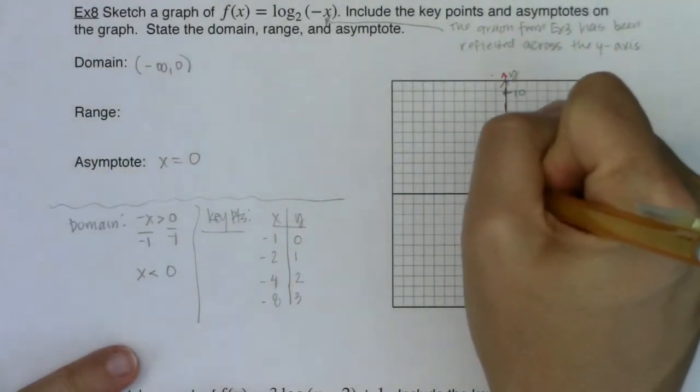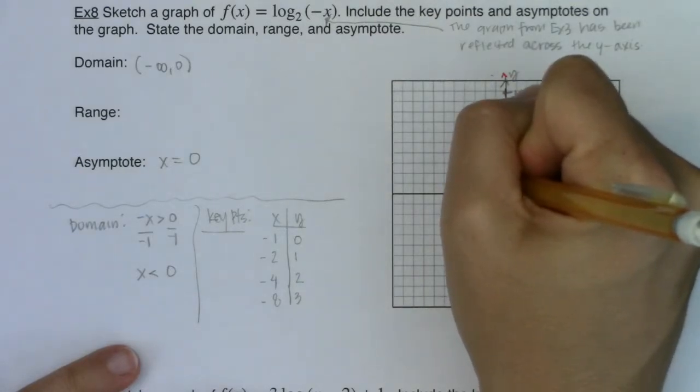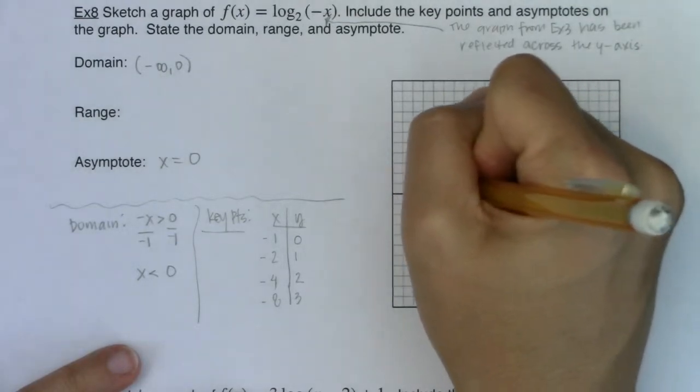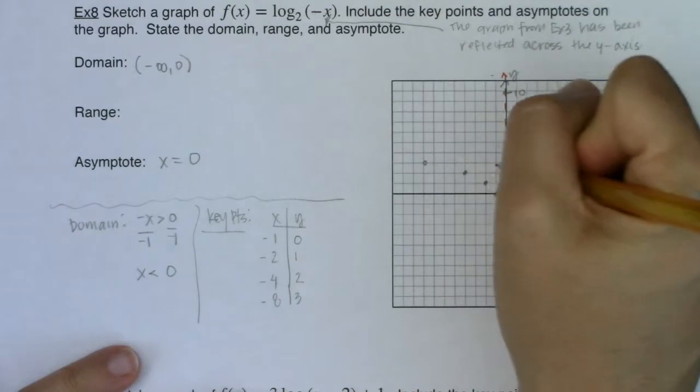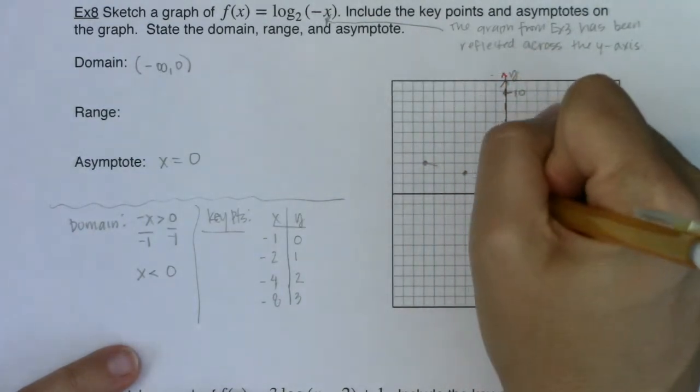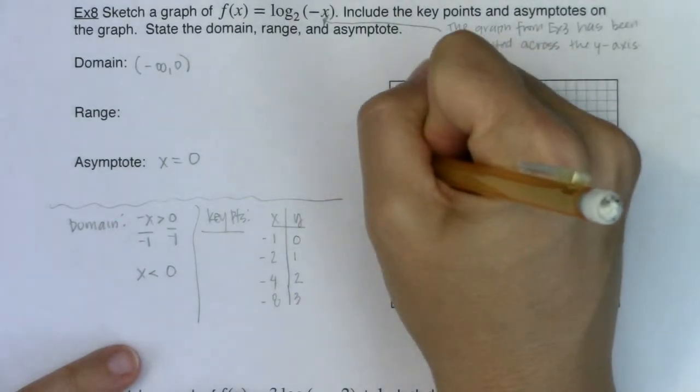Negative one, zero. Negative two, one. Negative four, two. And then negative eight, three. One, two, three. There we go. And I can go ahead and graph this function. Like that.